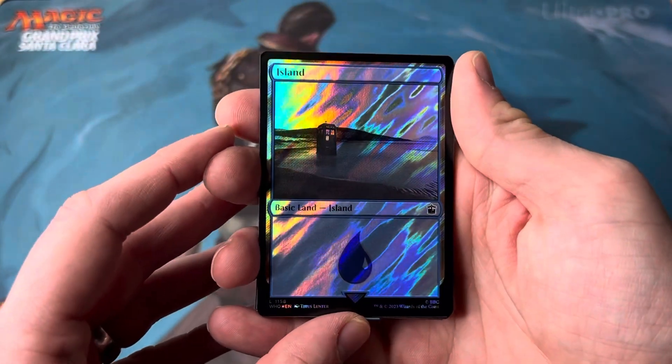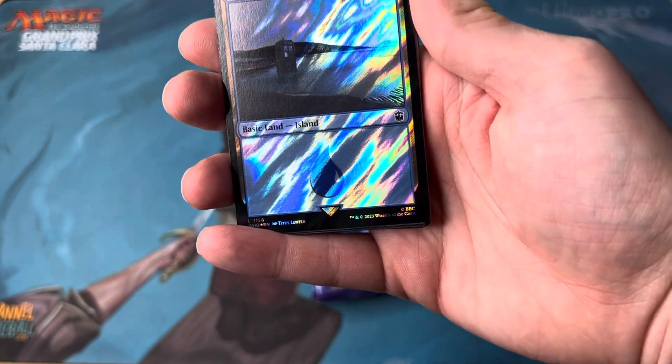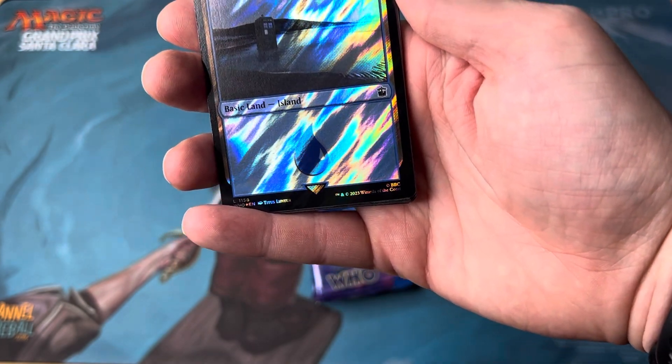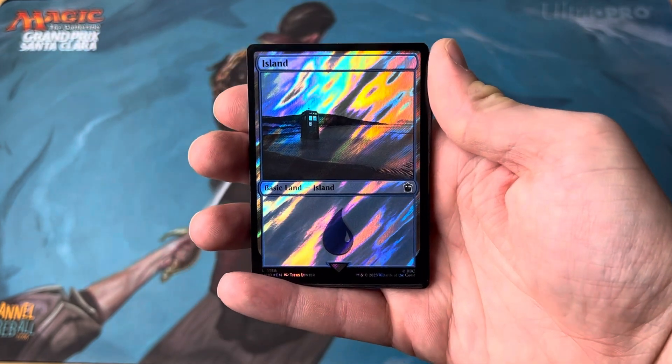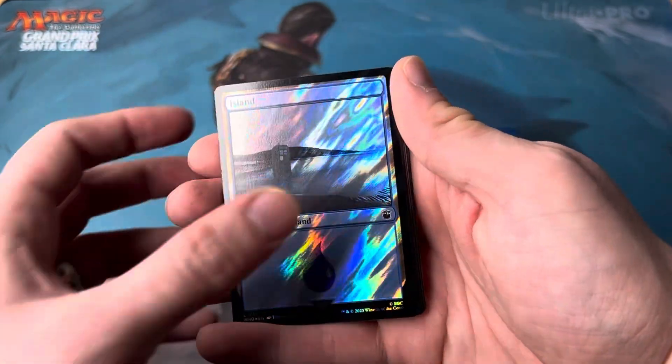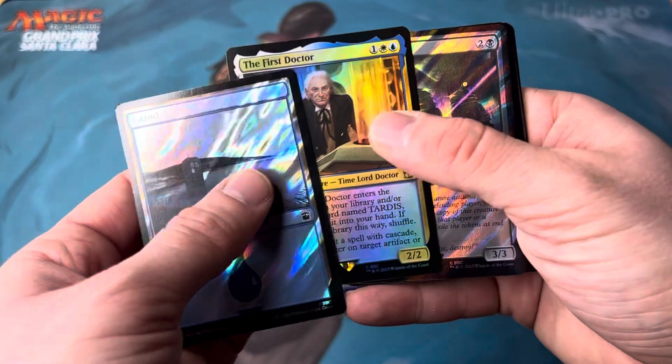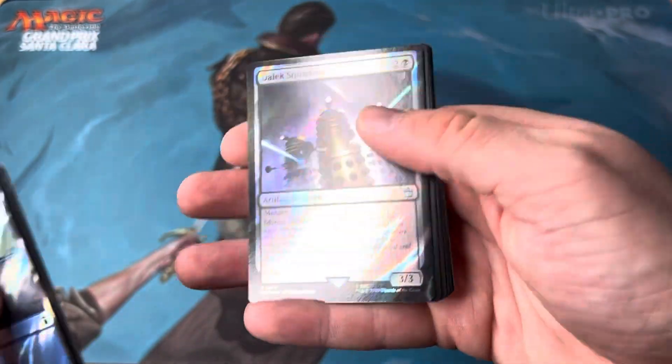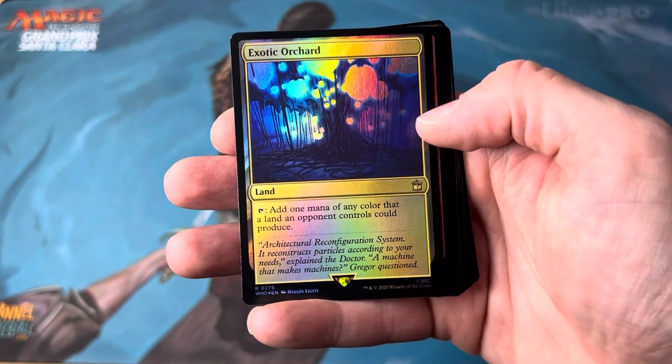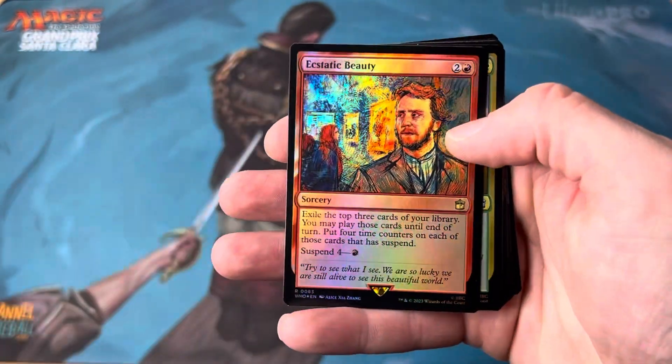Wow look at how beautiful these lands are. I might just try to turn down a little bit of the color. Maybe that's a little too intense but absolutely beautiful. The first Doctor. Dalek Squadron. I really like these Surge Foils. Beautiful. Exotic Orchard. Never a bad card to have in a deck.